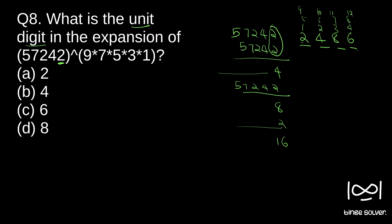The unit place will be either 2, 4, 8, or 6. As you can see in the options all four are given, so we have to find which one it is. We calculate the product of the exponent first: 9 into 7 is 63, and 5 into 3 is 15, then 63 into 15 — that gives us 945. So the product of the exponent is 945.